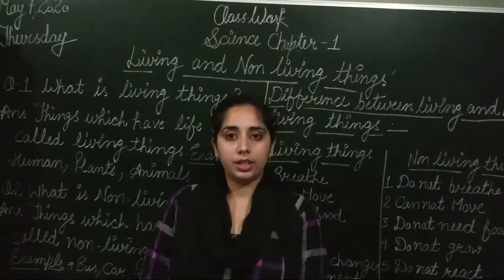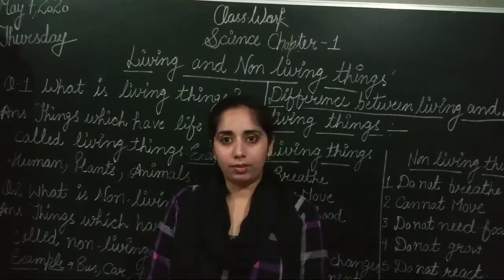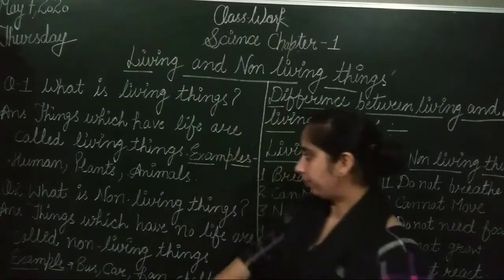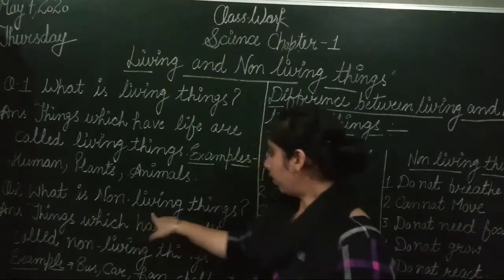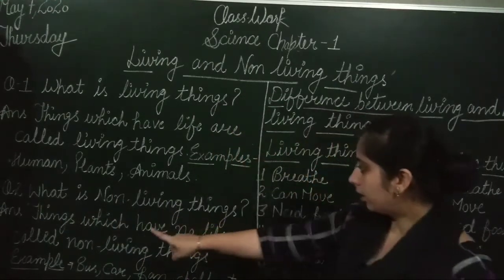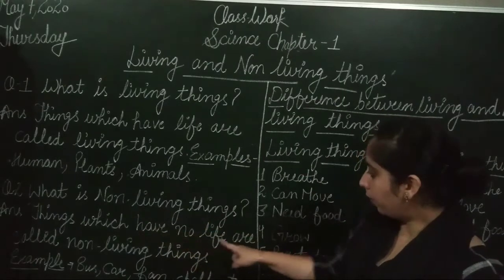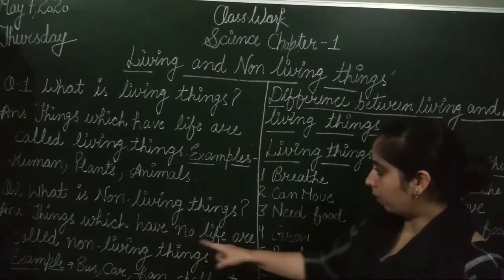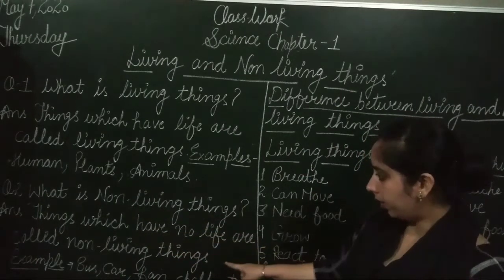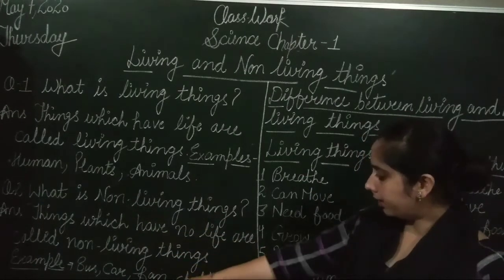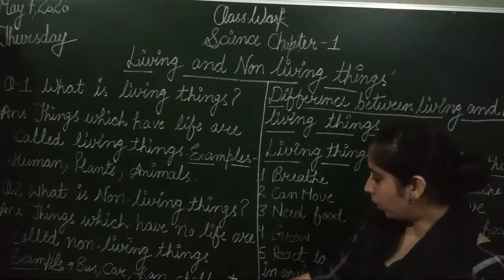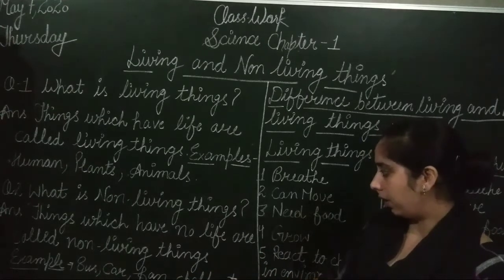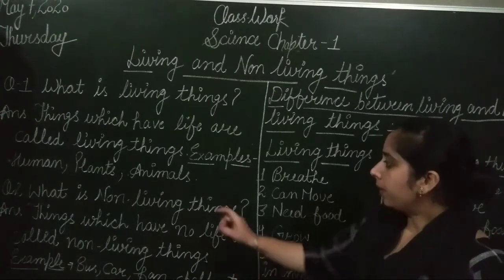And the second is non-living things. What are non-living things? Things which have no life are called non-living things. For example: bus, car, fan, chalk, etc.